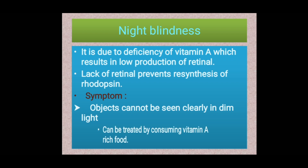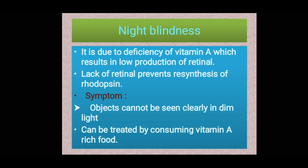Night blindness can be treated by consuming vitamin A rich food. The reason is deficiency of vitamin A leading to low production of retinal. The symptom is inability to see things in dim light, and it can be rectified by consuming vitamin A rich food.